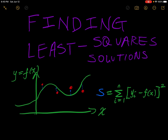Let me explain what this means. As you can see here on this green graph, there is a green curve, and the red points are the data points. What we're trying to do is find a function f such that the sum s — the difference between each data point and the y value on this curve — is minimized. We square that difference, and we're supposed to find the minimum value of s.